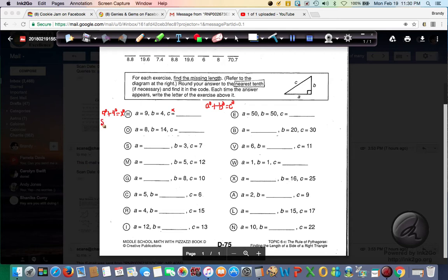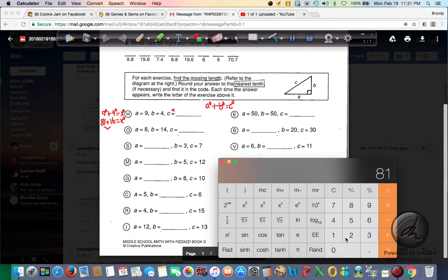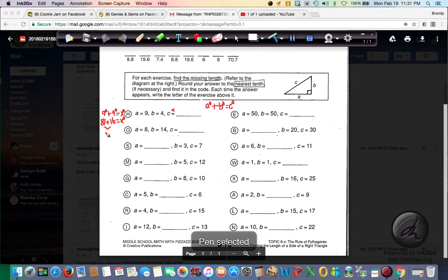So 9 squared is 81. If you don't have these squares memorized, that's okay. You can use the squared button on your calculator. It's, I think, two buttons above the eight key. And then 4 squared is 16. Equals X squared. Luckily, in this case, since C is X, it's already by itself. So once we get our exponents, our squares taken care of, then we can just add them together. So 81 plus 16. Let's take out our handy dandy calculator. And we have 81 plus 16 equals 97.